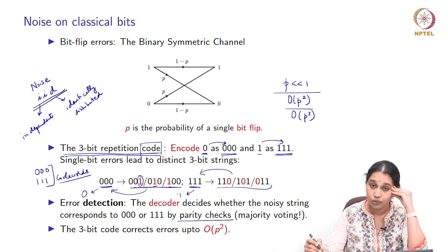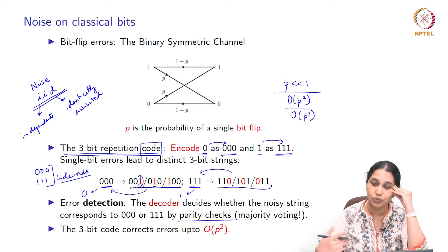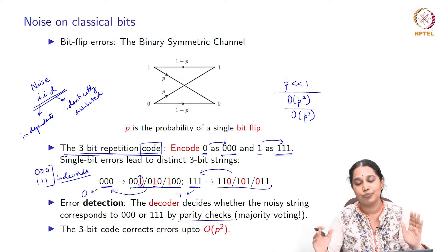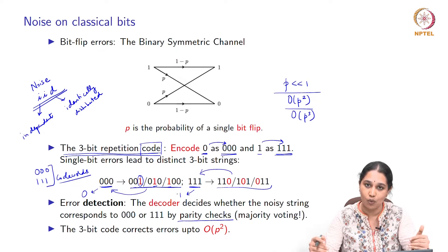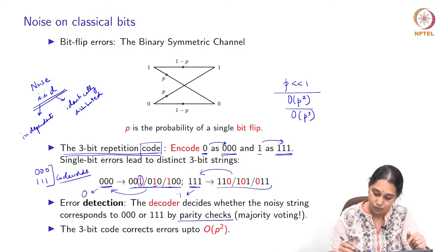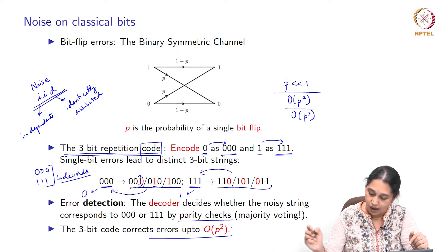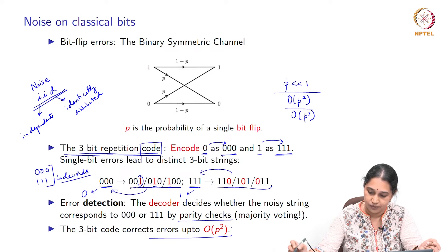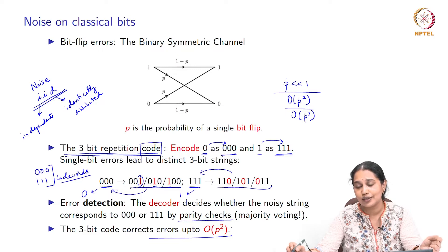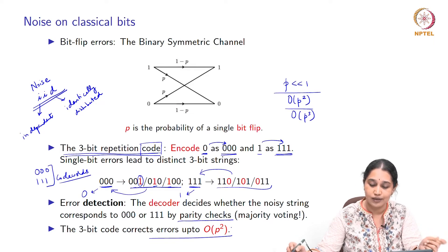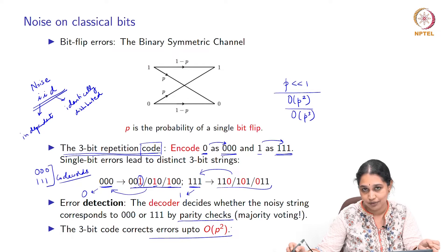We will revisit this terminology again in the context of quantum error correction. This idea of encoding a 0 into three 0s and 1 into three 1s is what is called a code — the simplest example of a classical code — it is what is called a 3-bit repetition code. It does help us resolve single bit errors and map back to the correct original bit. Once the decoder has mapped back to 0,0,0, he or she knows that three 0s represents a single 0 and three 1s represents a single 1. It is the 2-bit and 3-bit errors which we do not detect or correct with this code, so we are able to correct errors up to order p squared.